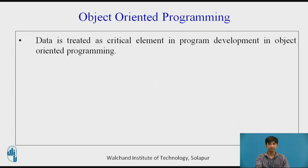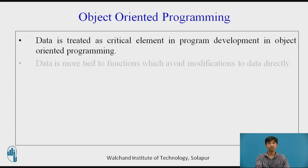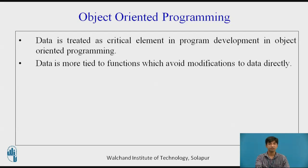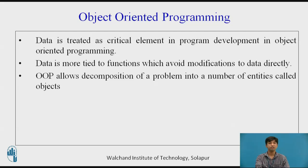The motivating factor in the invention of the object-oriented approach is to remove some of the flaws encountered in the procedural approach. Object-oriented programming treats data as a critical element in program development and does not allow it to flow freely around the system. It ties data more closely to the functions that operate on it and protects it from accidental modification from outside functions.